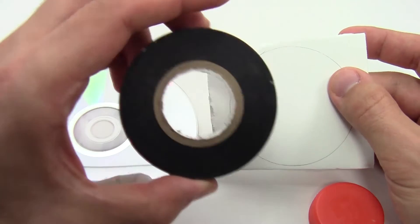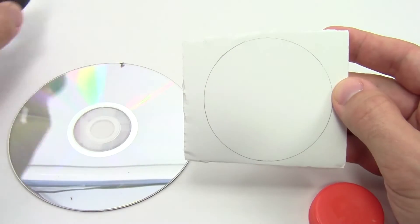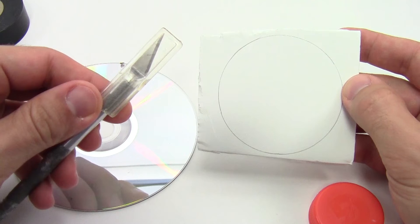First, trace something circular, like a roll of tape, onto the foam board, then use scissors or a hobby knife to cut it out.